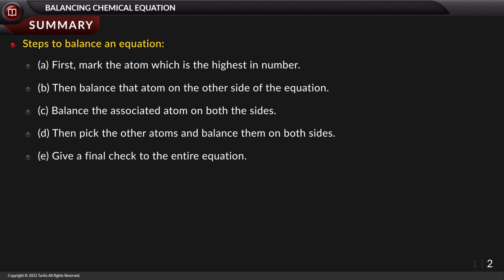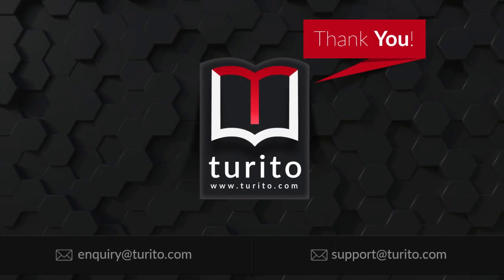Steps to balance an equation: (a) First, mark the atom which is the highest in number. (b) Then balance that atom on the other side of the equation. (c) Balance the associated atom on both sides. (d) Then pick the other atoms and balance them on both sides. (e) Give a final check to the entire equation.